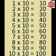Multiplication table of 10: 1 ten is 10, 2 tens are 20, 3 tens are 30, 4 tens are 40, 5 tens are 50, 6 tens are 60, 7 tens are 70, 8 tens are 80, 9 tens are 90, 10 tens are 100.